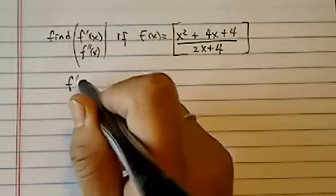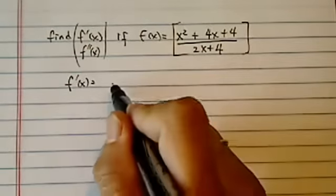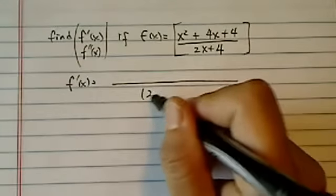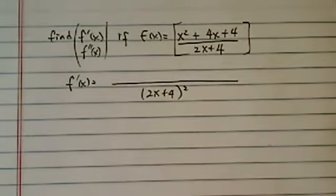We're going to use two methods. Method one, we're going to use quotient rule. Quotient rule says I'm going to do the square on the bottom.